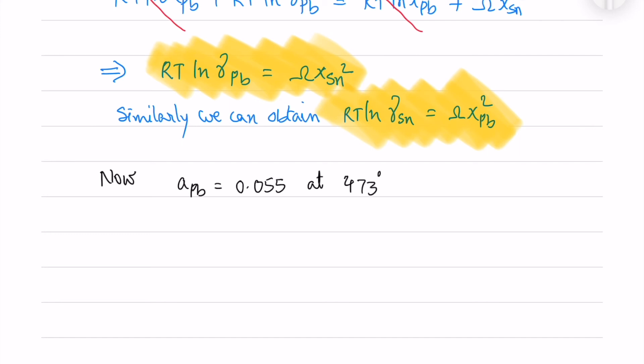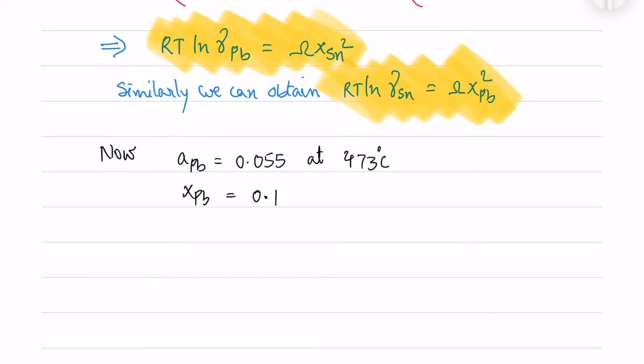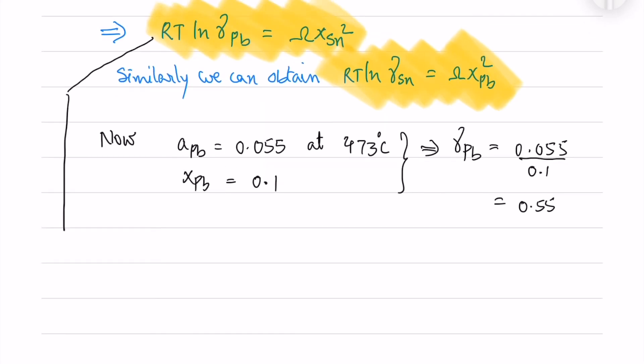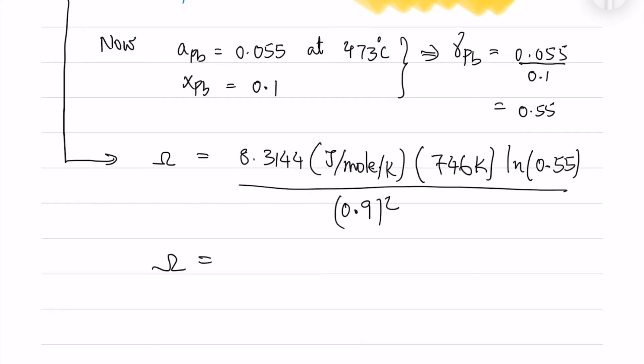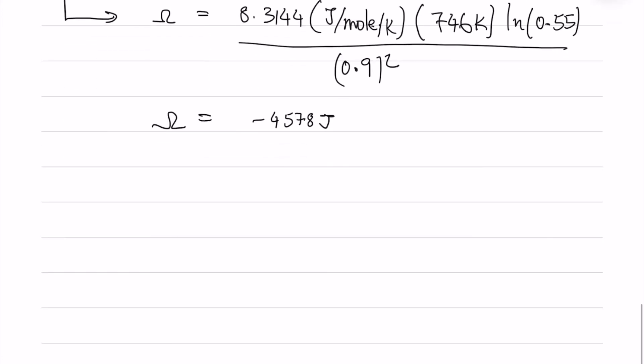Now in the question we are given the activity of Pb and the mole fraction of Pb. So from that we can obtain the activity coefficient as 0.55. From the above equation, I will expand the terms. R is 8.3144 and temperature is 746 Kelvin, and x_Sn square is 0.9 squared. Because x_Pb is 0.1, I will obtain the omega as the interaction parameter is minus 4578 joules.